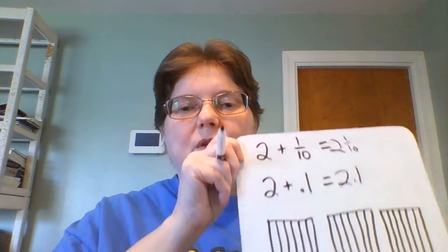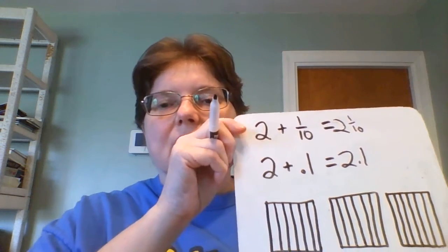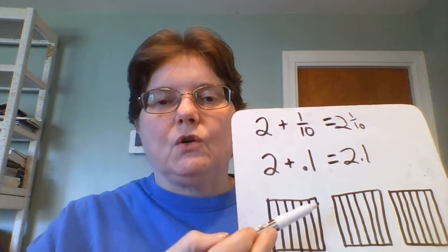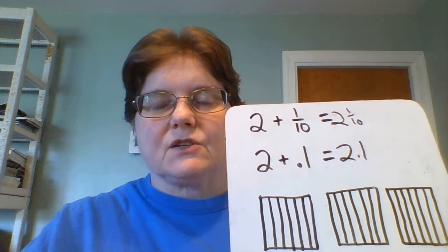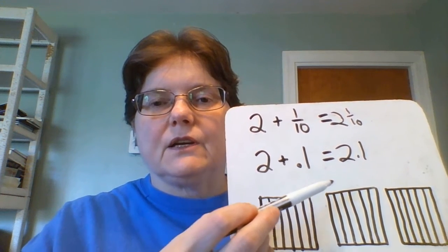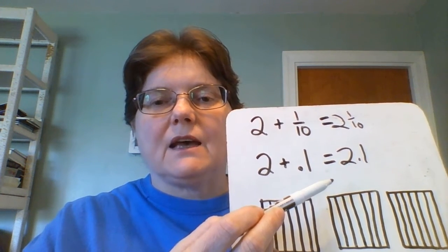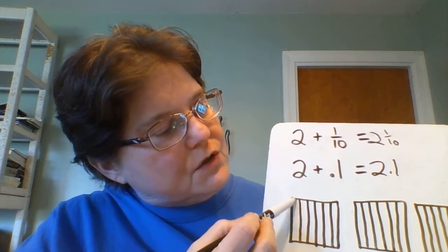We can show this with an area model. Here we have 3 whole squares and they're broken up into 10 parts each. If we want to color in 2 and 1 tenth we would color in 2 whole.